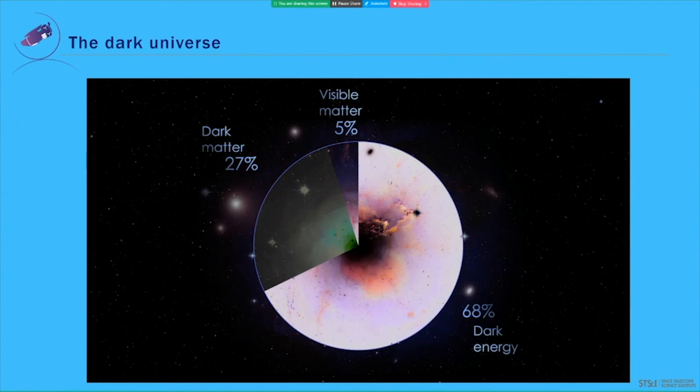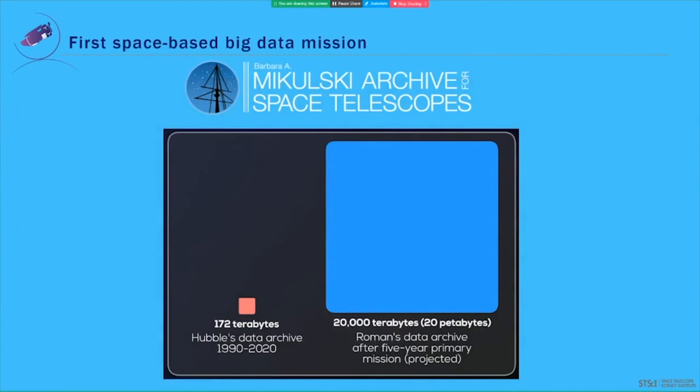All of this data from the 5 years of Roman's primary mission will be made immediately available to anybody with internet access. So what else will we find in that data? Well, all of that data will be made immediately available via the Barbara A. Mikulski Archive for Space Telescopes, otherwise known as MAST.